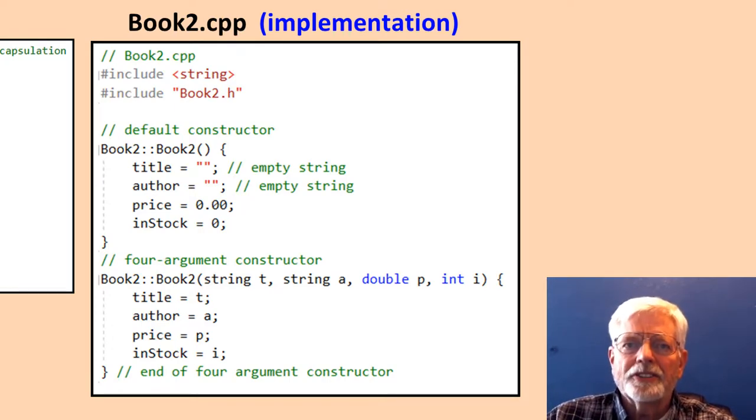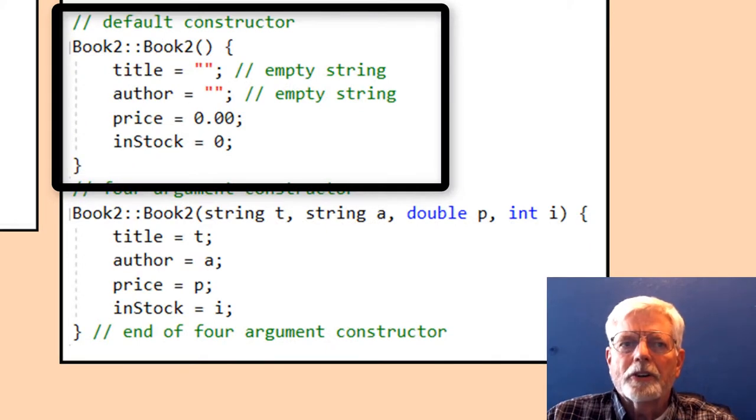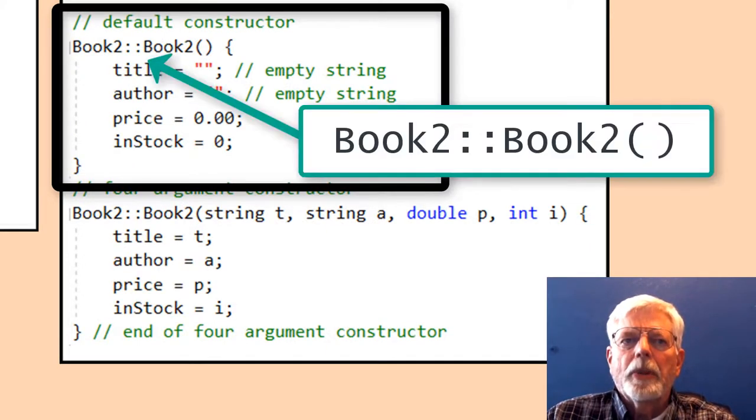The code for the default constructor is written as Book2 colon colon Book2 open parenthesis close parenthesis. The double colon characters are called the scope resolution operator.